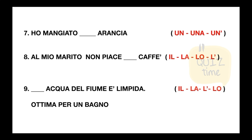Ho mangiato un'arancia — ho mangiato arancia. Choose: un, una, or un apostrofo. Al mio marito non piace il caffè. Choose the article: il, la, lo, or l'apostrofo.